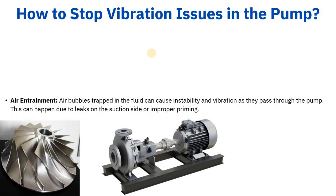Air entrainment is also a cause of vibration. If air bubbles are trapped in the fluid, they create instability and vibration as they pass through the pump. This can happen due to leaks on the suction side or improper priming. If air or gas is entrained or trapped within the suction side of the pump, it creates unstable conditions and reduces flow. That is why we always ensure proper priming — filling the pump with liquid so all air is completely removed.